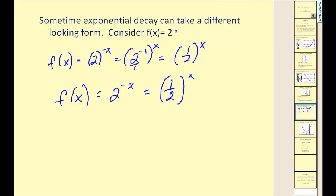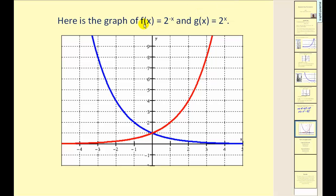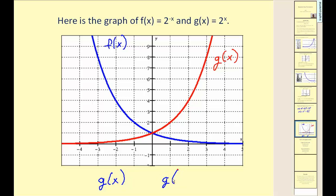The reason I wanted to show that: if we look at the graph of f of x equals two to the power of negative x and g of x equals two to the power of x, these two functions have y-axis symmetry. If we take g of x and calculate g of negative x, the result is a reflection across the y-axis. Replacing x with negative x clearly shows the y-axis symmetry between these two functions.